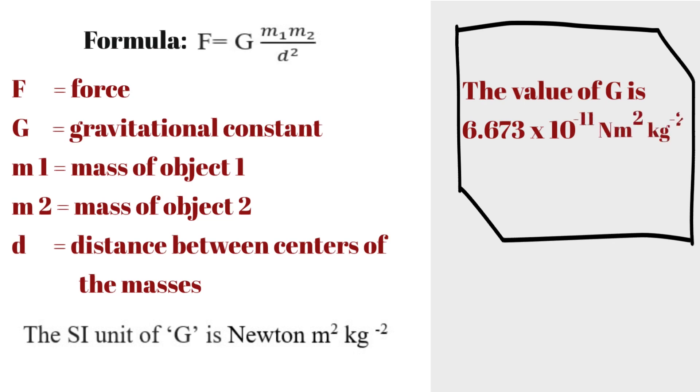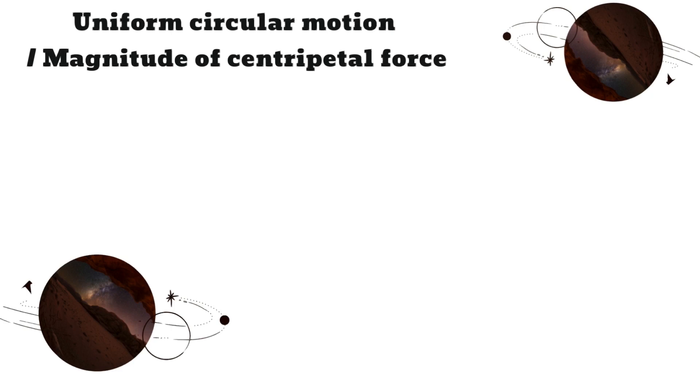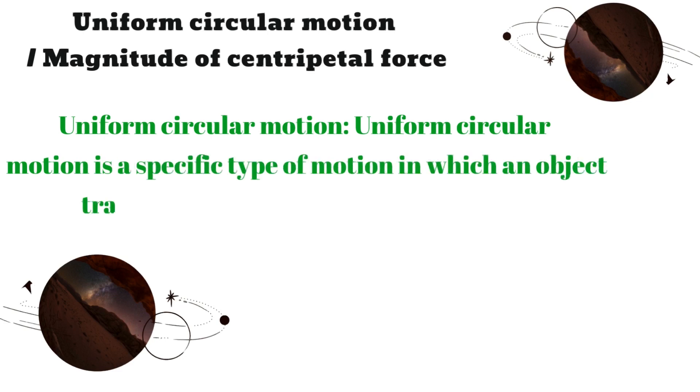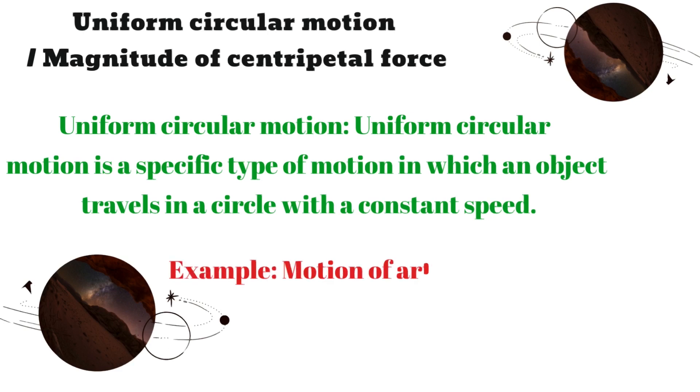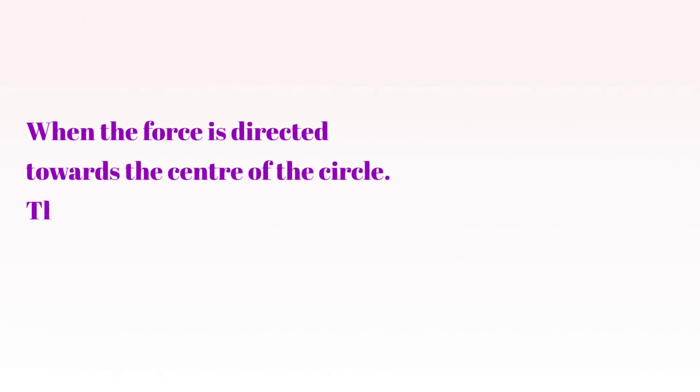So dear friends, let us now learn about uniform circular motion or magnitude of centripetal force. Uniform circular motion is a specific type of motion in which an object travels in a circle with a constant speed. For example, motion of artificial satellites around Earth. When the force is directed towards the center of the circle, this force is called centripetal force.